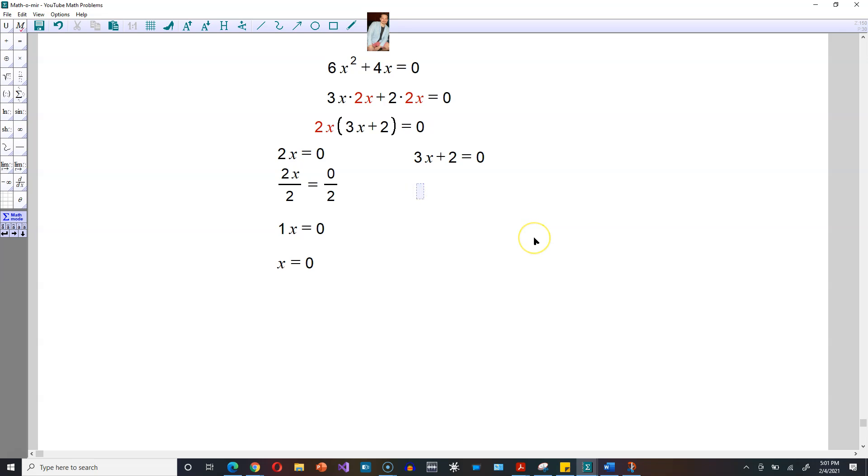For the other one over here, I'm going to subtract 2, so it's going to be 3x equals negative 2. Then you're going to divide both sides by 3, so it's going to be 3x divided by 3 is equal here to, at first, negative 2 divided by 3.